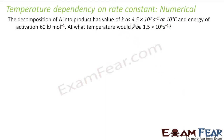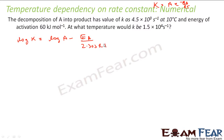The decomposition of A into product has K given at 10°C and the energy of activation is given. We need to find the temperature at which K takes a new value K₂. We'll write the Arrhenius equation in log form for two cases: K₁ at T₁ and K₂ at T₂, where T₁ is 10°C which equals 283 K, and T₂ is what we need to find.